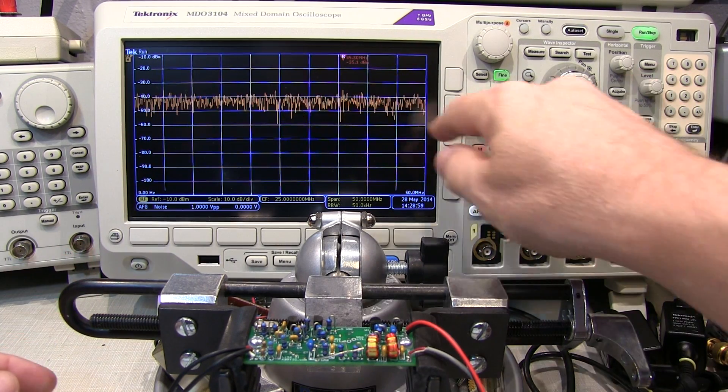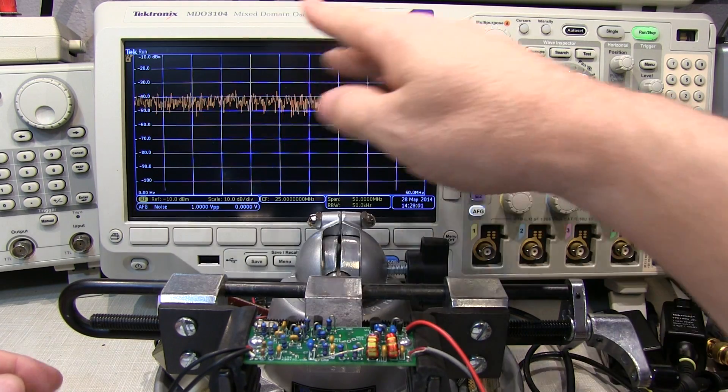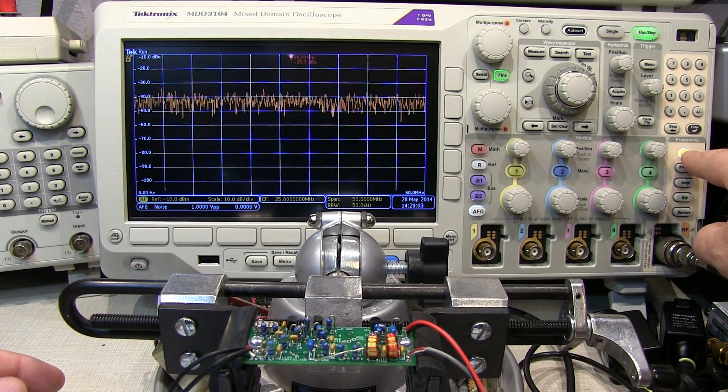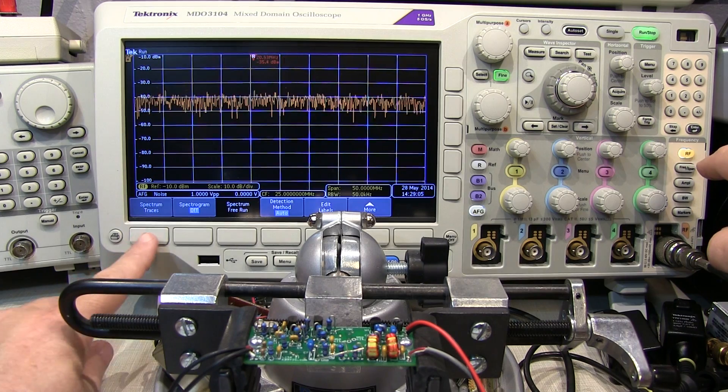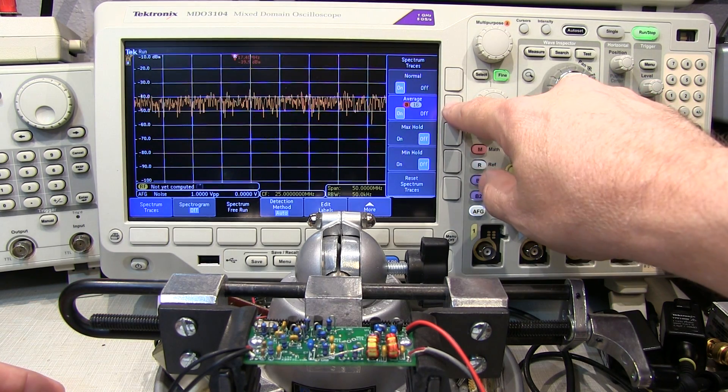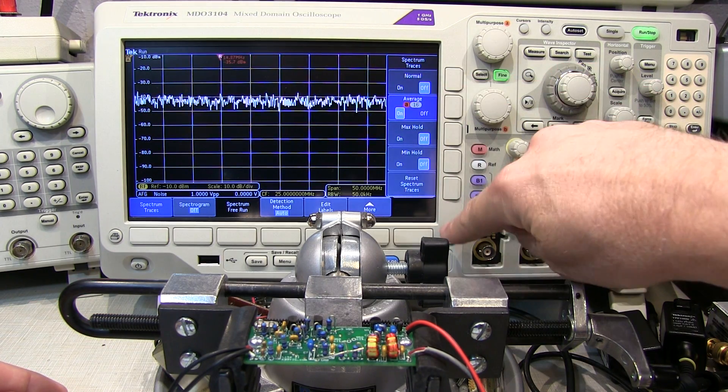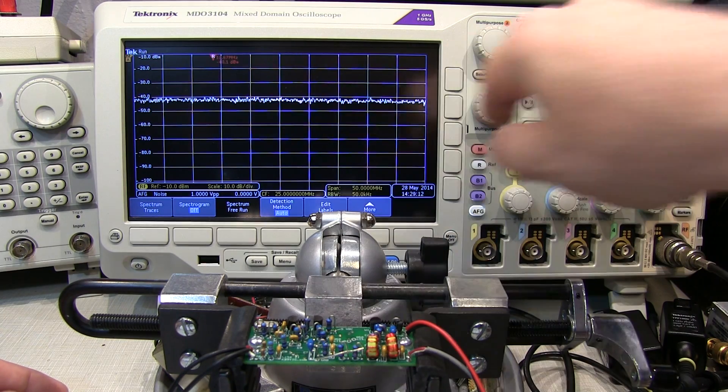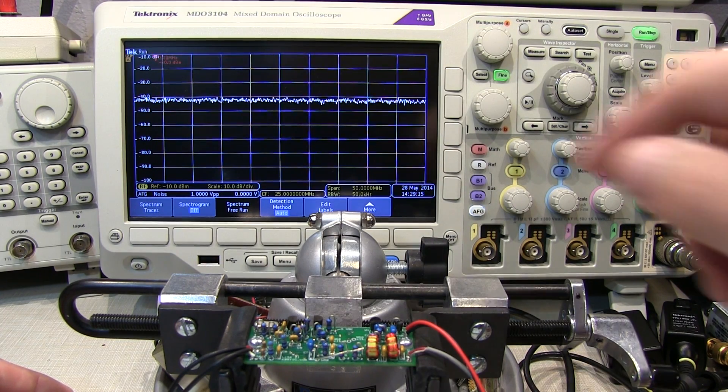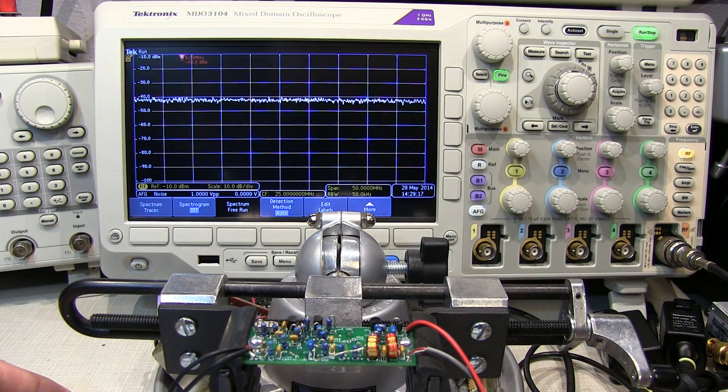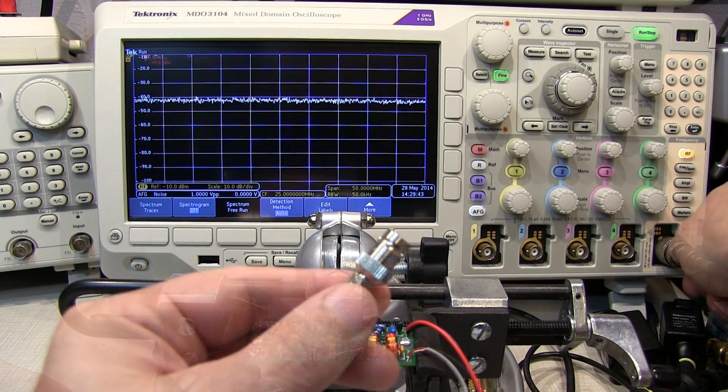Now with this noise signal, because it is noise, you're going to get these random variations. It's helpful to take a look at that using an averaging of the traces to kind of flatten out the random variations. And we get a nice picture of how flat our input signal is that we're going to apply to the filter.